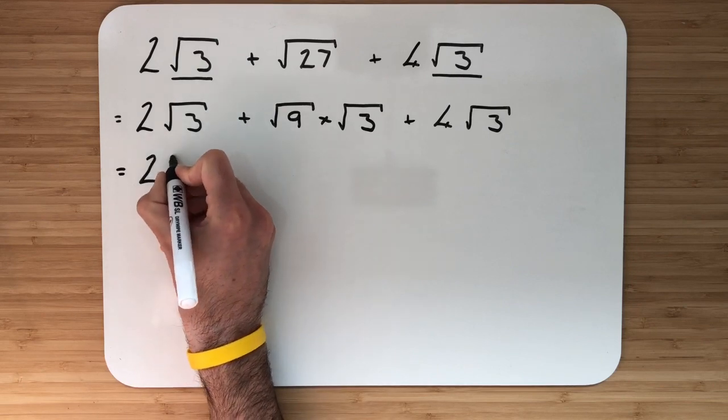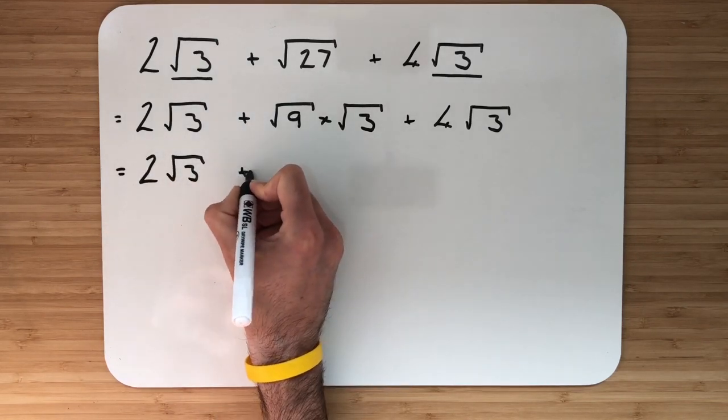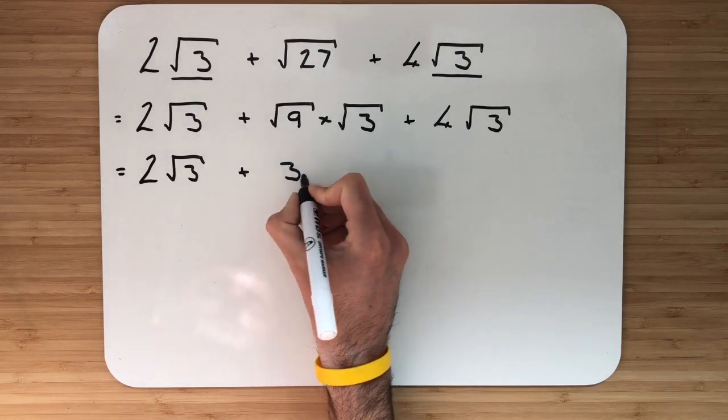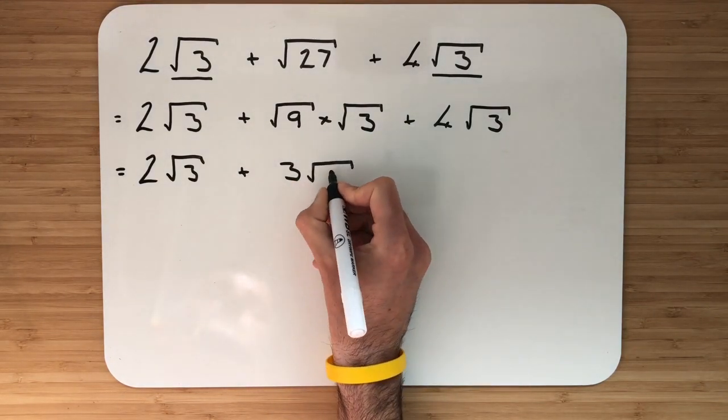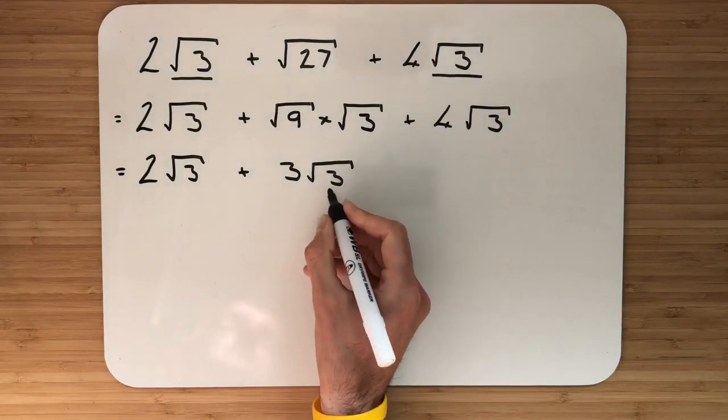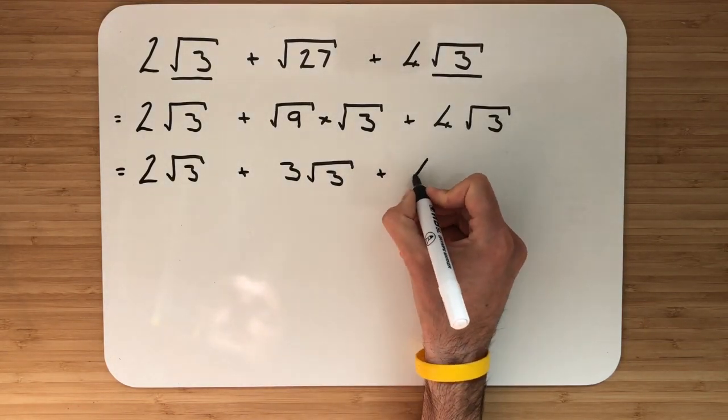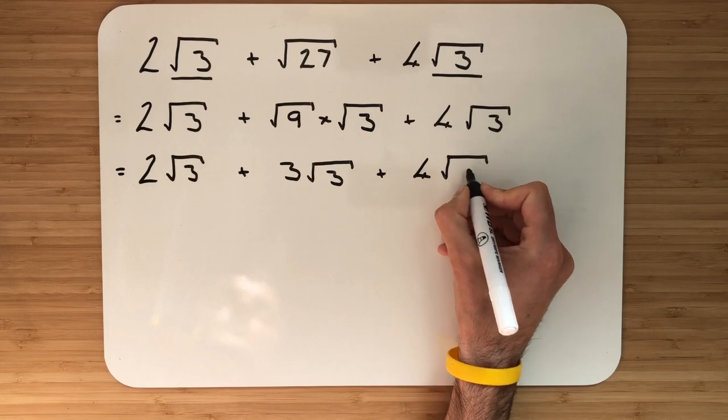So we have 2√3, add. The square root of 9 is 3 multiplied by √3. I'm just going to jump straight away to writing it like that. So that's 3√3. Then I'm going to now add on this 4√3.